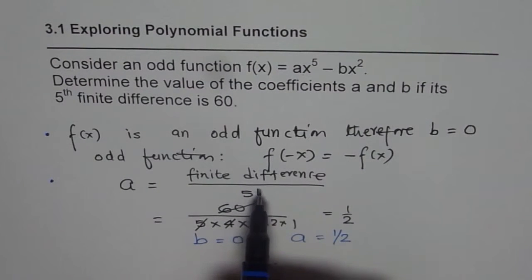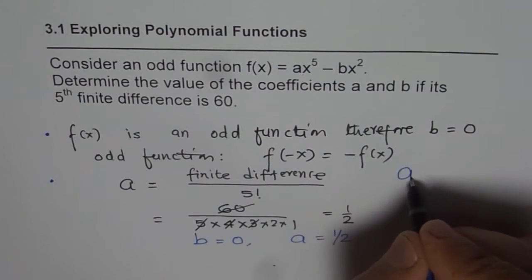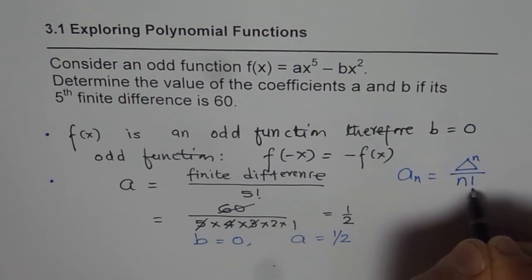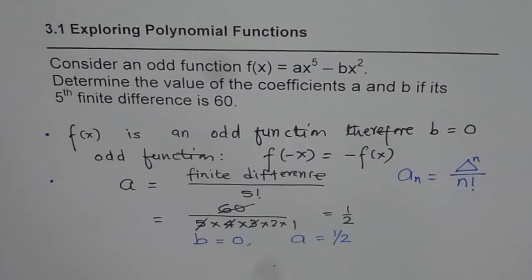So remember this, it is a very good formula to remember. a_n, the leading coefficient, is the nth finite difference over n factorial. So that is the formula to remember.